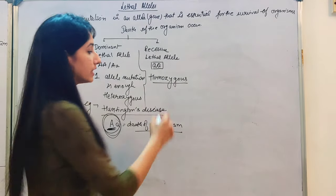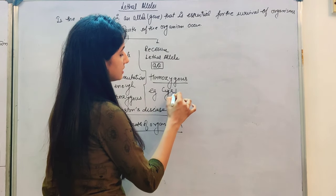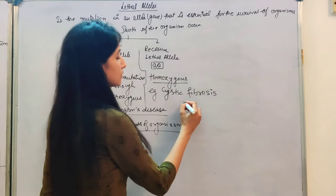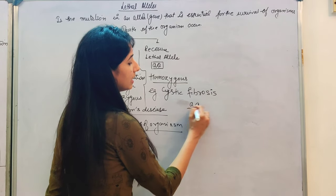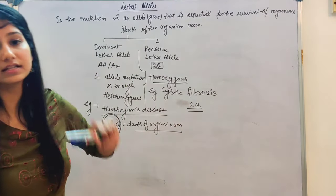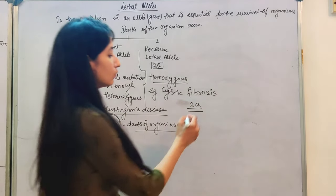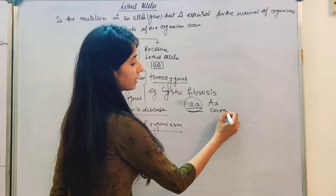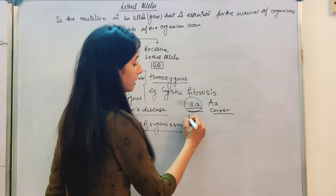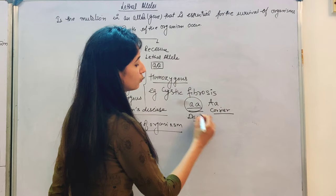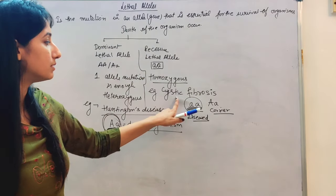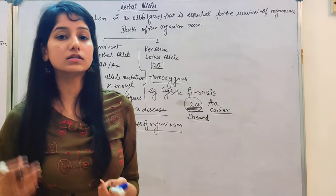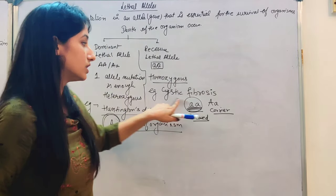While in recessive lethal alleles, the example is cystic fibrosis. Until and unless both alleles are mutated, the organism will not get the disease. If only one allele is mutated, the organism will be a carrier and will survive. It will be diseased only when both alleles are mutated. In cystic fibrosis, there is a deposition of mucus, sweat, and digestive juices in the body.